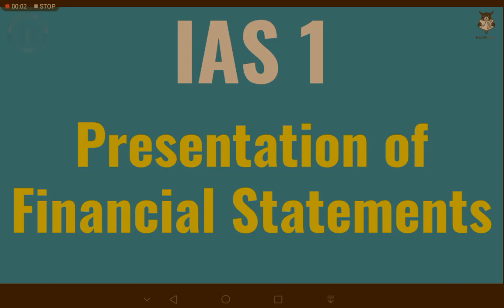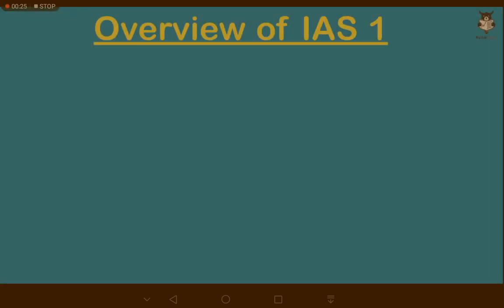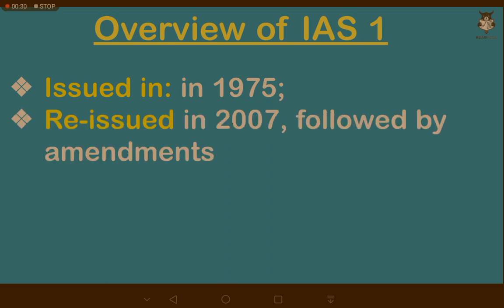Hello and welcome to Kowa Academy. I've started a new series where I will be discussing accounting standards — IFRS and IAS. This is the first lecture of that series. Today we are going to talk about the first accounting standard, IAS 1, which is Presentation of Financial Statements. It was first issued in 1975, then reissued in 2007, and followed by certain amendments over time.